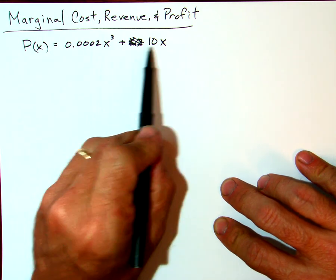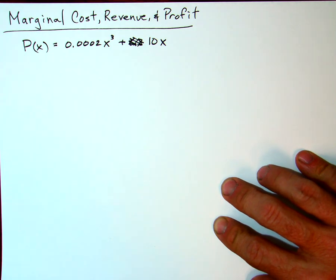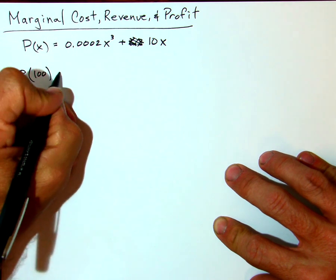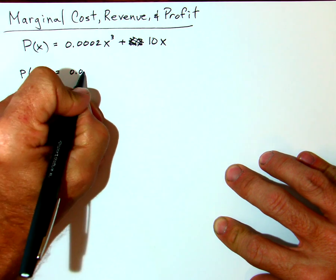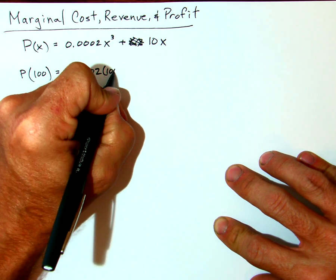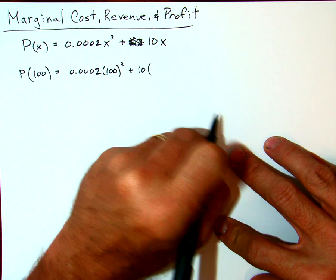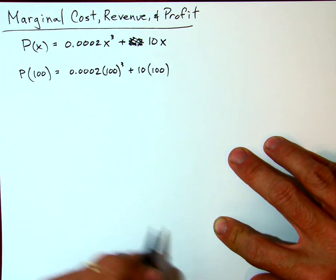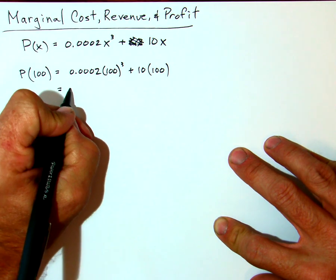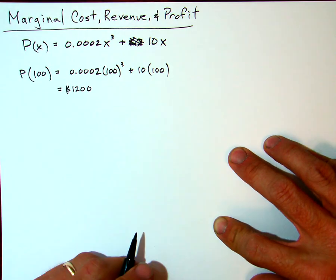This says that if I sell x bicycles, then this would dictate or predict my profit for selling x bicycles. For example, let's say I sell 100 bicycles. Then it would be 0.0002 × 100³ + 10 × 100. If you do the math, you would find that the profit would be $1,200 for selling 100 bicycles.